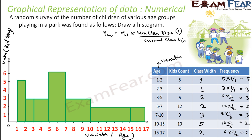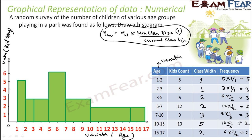The catch in this case was that the class width was not the same. Since the class width was not same, we have to get the new frequency using the formula: old frequency × (minimum class size / current class size). Please remember this formula. We have also explained the logic behind it — watch the previous video in the same chapter.